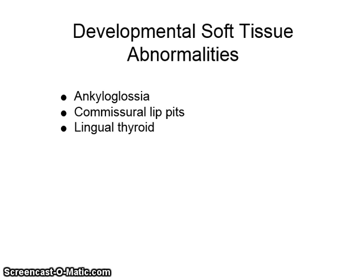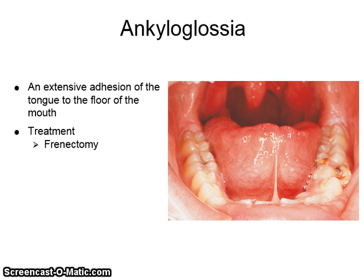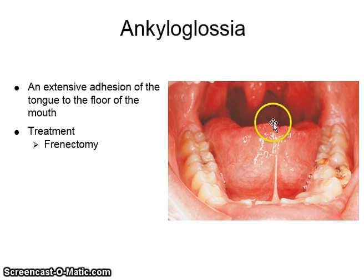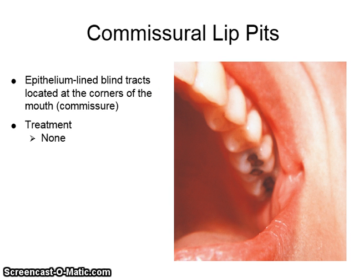Developmental soft tissue abnormalities include ankyloglossia, commissural lip pits, and lingual thyroid. Ankyloglossia is an extensive adhesion of the tongue to the floor of the mouth. The tip of the frenum is close to the tip of the tongue, making the tongue create a dished-out shape. Treatment is by frenectomy when needed. Commissural lip pits are epithelium-lined blind tracts located at the corners of the mouth or commissures. No treatment is necessary.